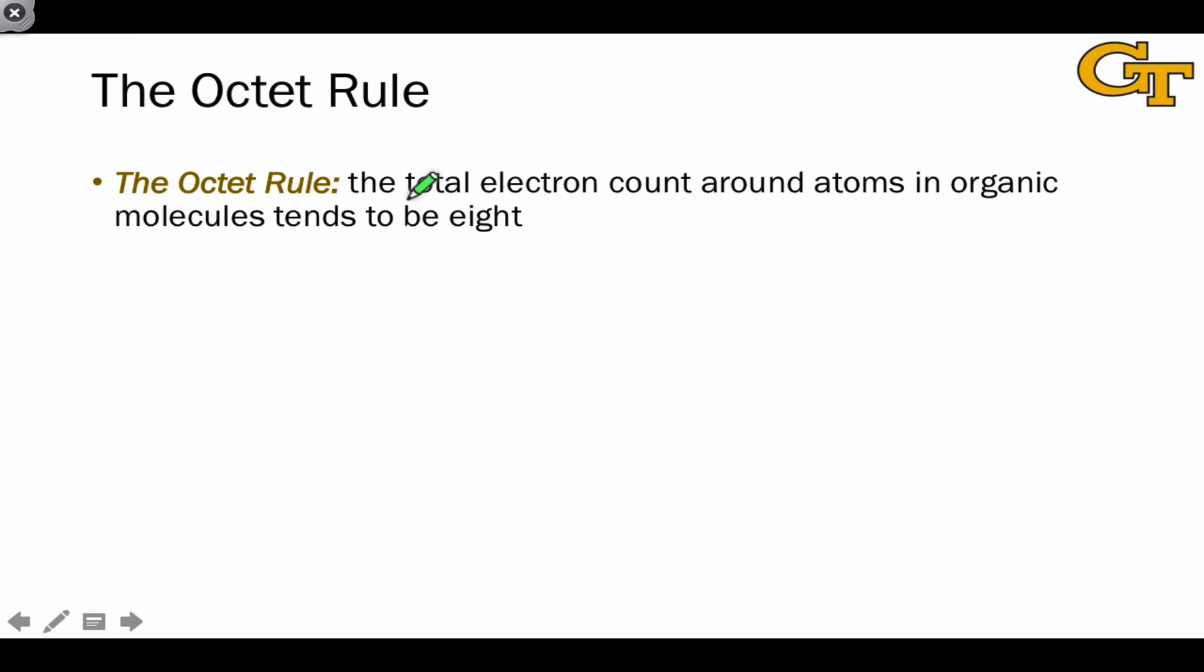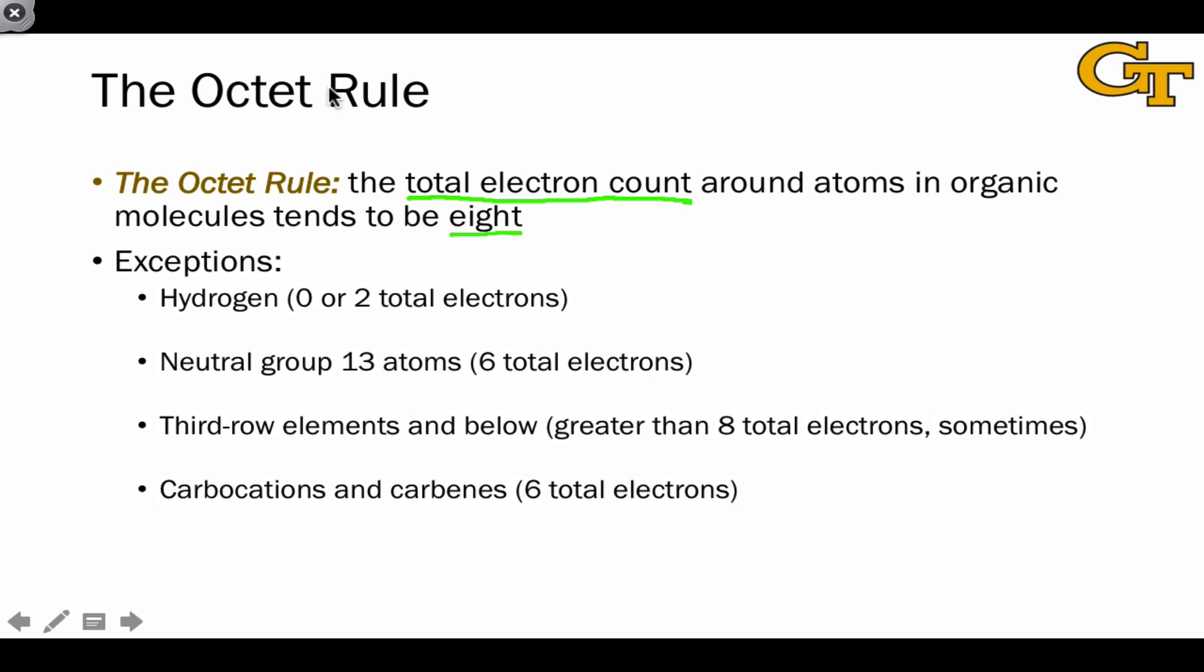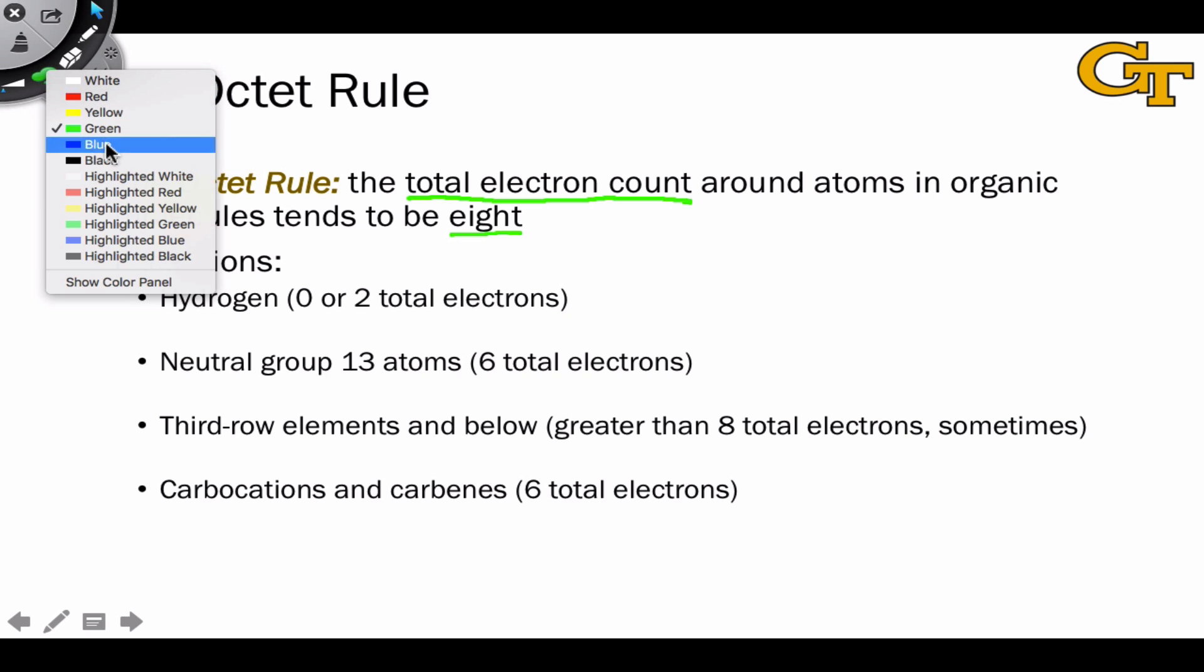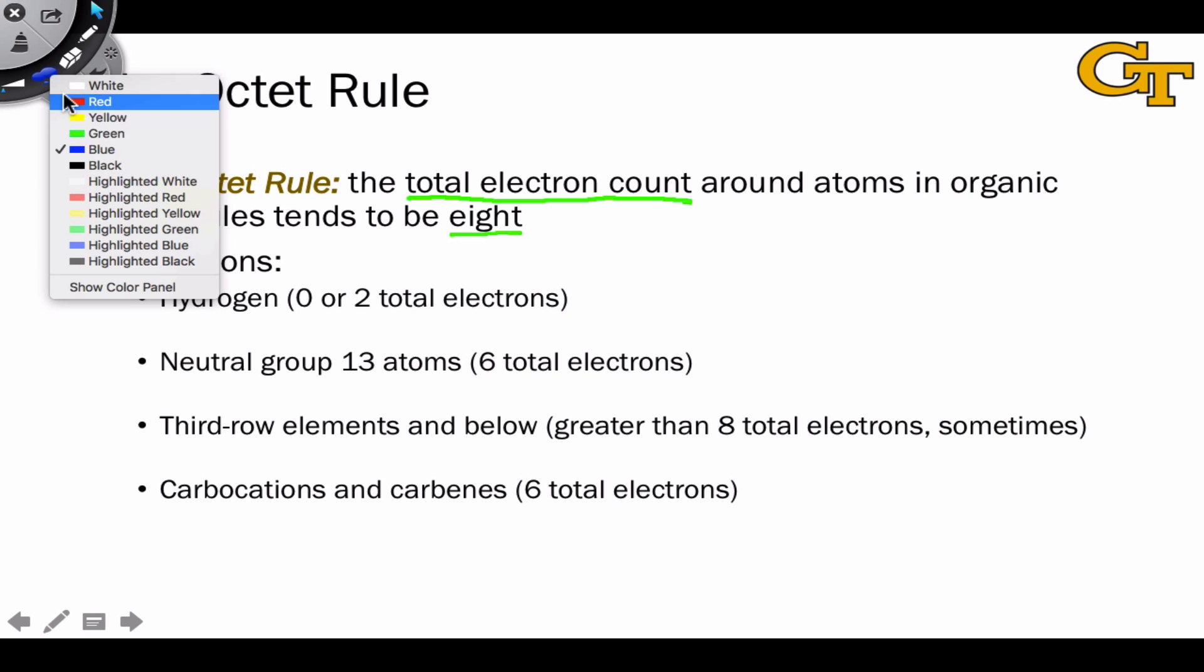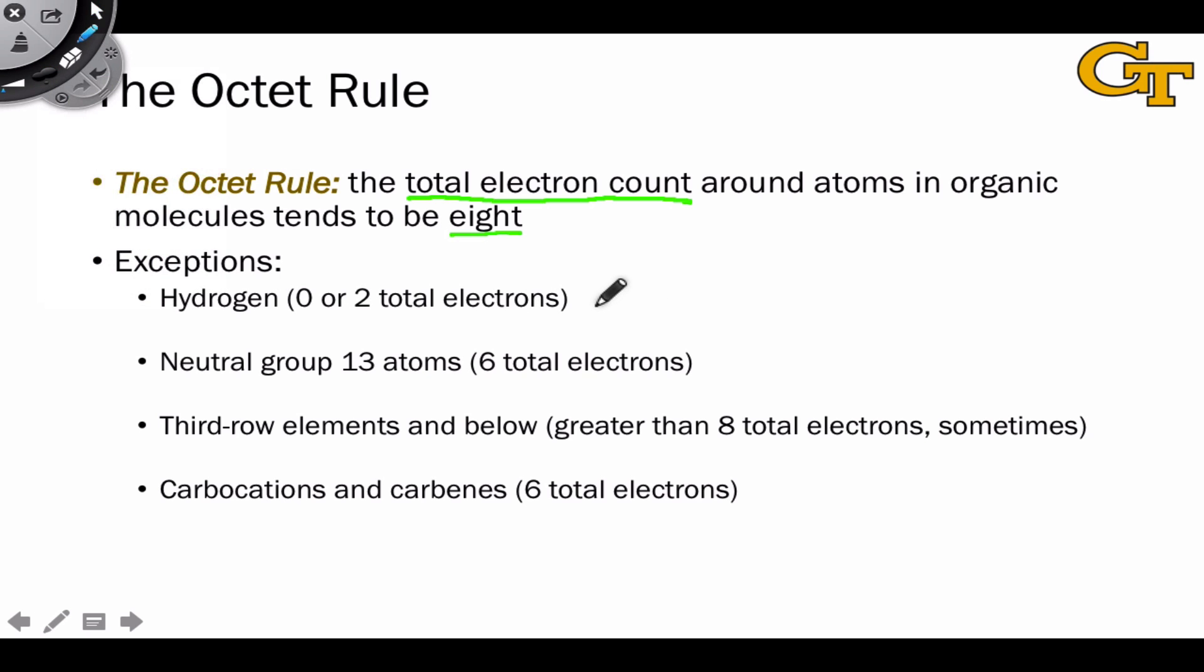The octet rule says that the total electron count, as we defined it on the last slide, tends to be eight for atoms in organic structures. There are a few important exceptions to the octet rule, and these are situations where atoms have a total electron count very different from eight. Recognizing these exceptions is very important for a couple of reasons, one of which I'm going to touch on on this slide. So the first is hydrogen, and we've seen this already.